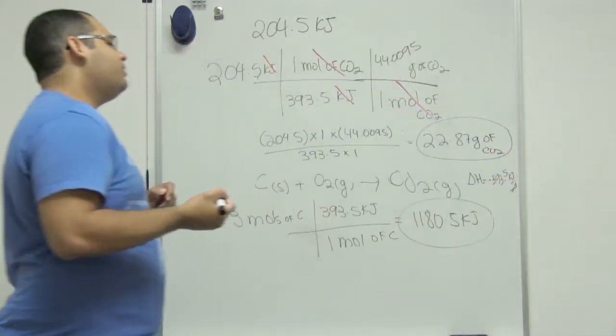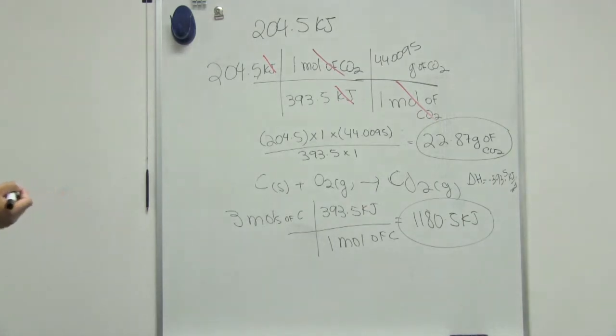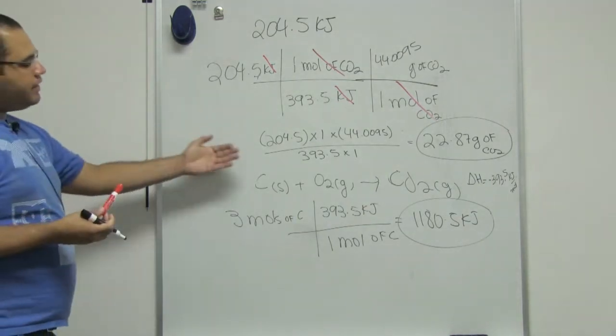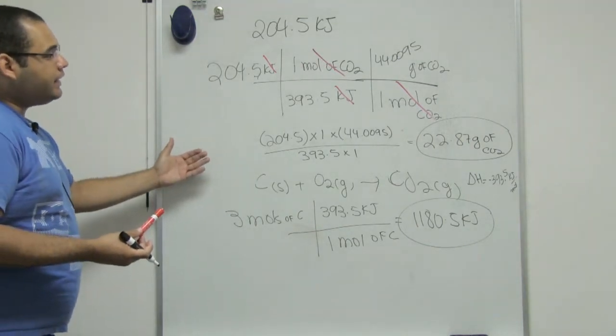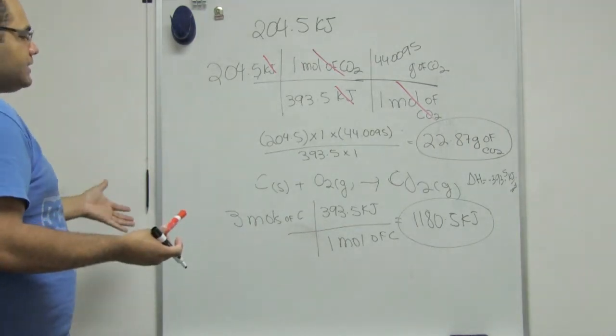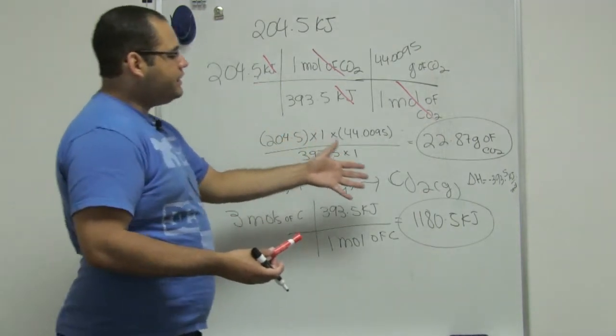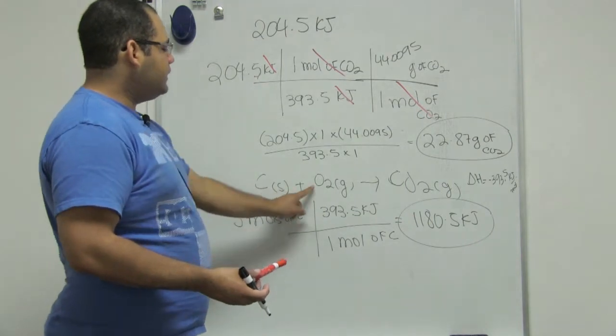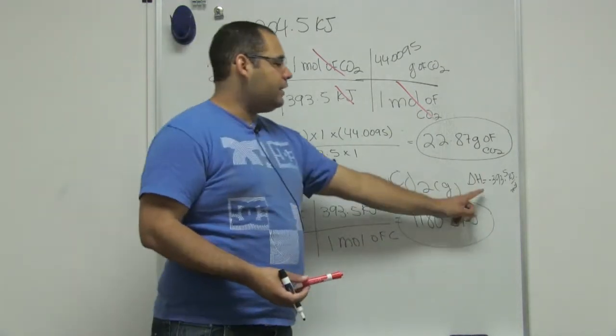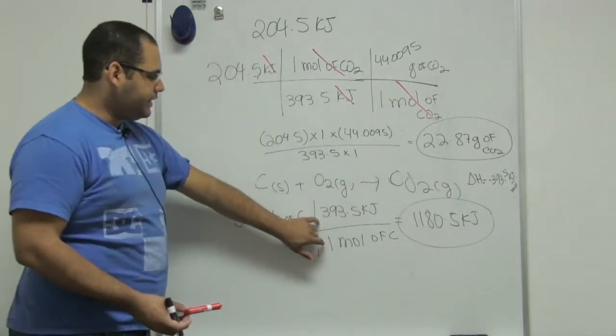So for problems related with heat, I need to have my equation. My equation needs to be balanced. And then I look at the problem. The problem can ask me how much heat is released or absorbed. And I use the relationship between the balanced equation and the delta H like I did in this case here.